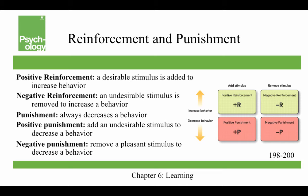In operant conditioning, positive and negative don't mean good and bad. Instead, positive means adding something and negative means taking something away. Reinforcement means increasing a behavior and punishment means decreasing a behavior. Positive reinforcement is when a desirable stimulus is added to increase a behavior — for example, you might pay kids to read books and find that reading comprehension goes up because they're reading more books. That actually leads to something called the over-justification effect, which is when you pay people to do something they like to do anyway and they start to like it less.